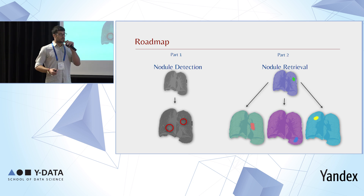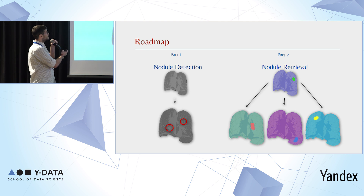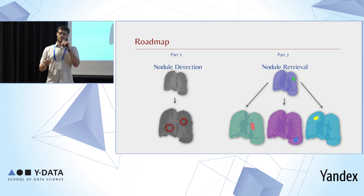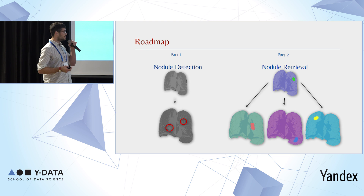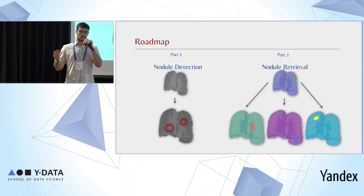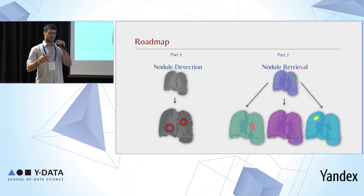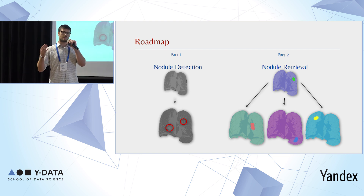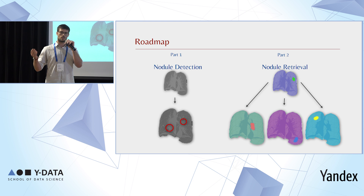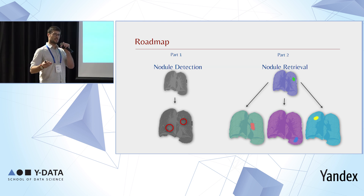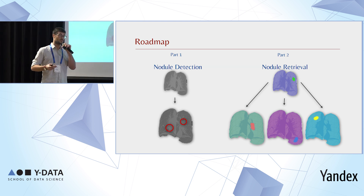Our project is comprised of two parts. The first part is going to build a detector network that is able to find nodules given a CT scan, and the second part is going to build upon that a retrieval system that, given a suspicious CT scan nodule, is able to propose additional nodules from different CT scans. We're going to talk about the motivation for that later on during the presentation.